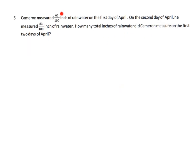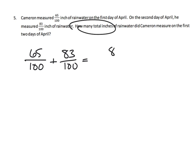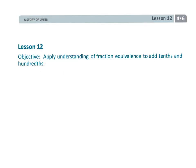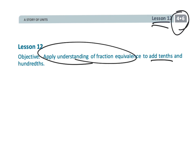Lastly, there's a word problem of the same kind of practice. On the first day we had 65 hundredths of an inch of rainwater; on the second day we had 83 hundredths of an inch. The total inches: you add and get 148 hundredths. We don't want students to call that 200 — these are labels, like units. And 148 hundredths equals 1.48 inches of rainwater. We could also leave it as a fraction: 1 and 48 hundredths of an inch. That wraps up fourth grade module 6 lesson 12.